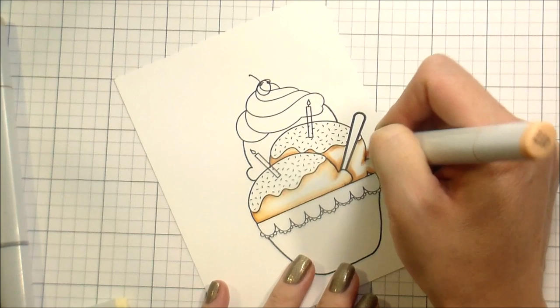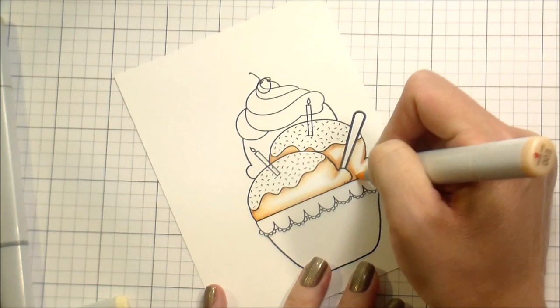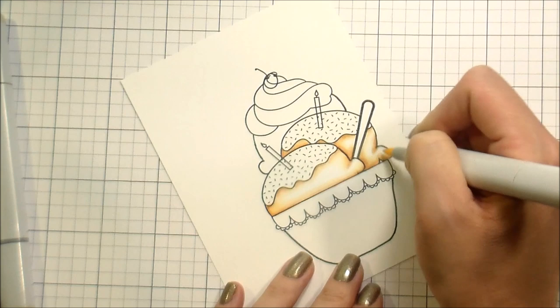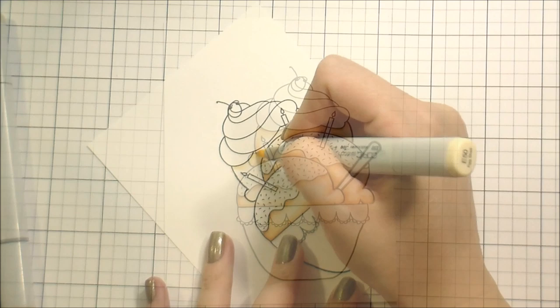Once I have that done, I'm going to color the other one the same exact way. The last scoop in the back, I'm just going to skip it because you've seen it.